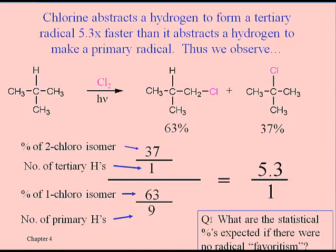If you answer this question at the bottom right, you can hopefully convince yourself that your expected proportion would be 90% of this first product and only 10% of the other one, because only one of the 10 hydrogens can be removed to give us that second product. But we don't get 90 to 10 — we get 63 to 37.